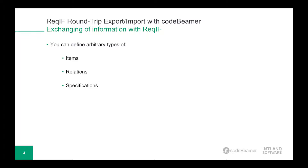Relation types are similar to CodeBeamer's association types. They define a specific type of relationship between two items — for example, depends on, derived from, etc. Relation types can also define attributes for relations. Specifications aggregate items into a tree hierarchy. They can include items of different types, and the same item can be included in multiple specifications or in the same specification multiple times. Specifications are more like a table of contents or document outlines than real documents, because they cannot carry any extra information except for the tree hierarchy itself.